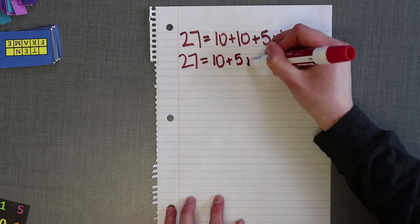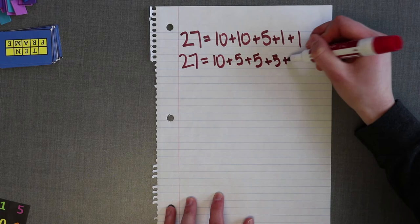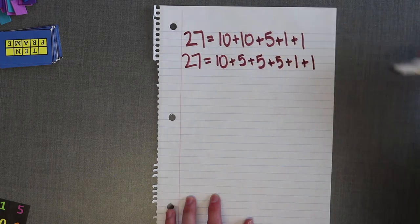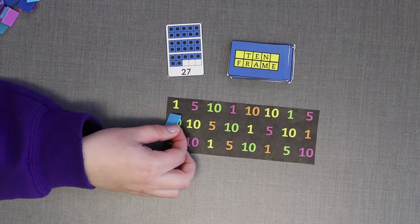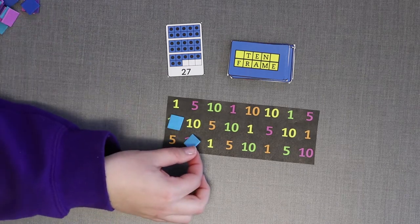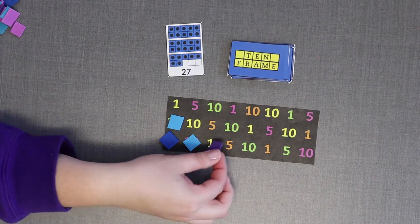Think about other ways to do it. There are multiple ways to break apart your number. Choose only one way. Use markers to cover the different parts of your blackout number on your game board. So, if I use the first way I decompose 27, I would cover two tens, one five, and two ones.